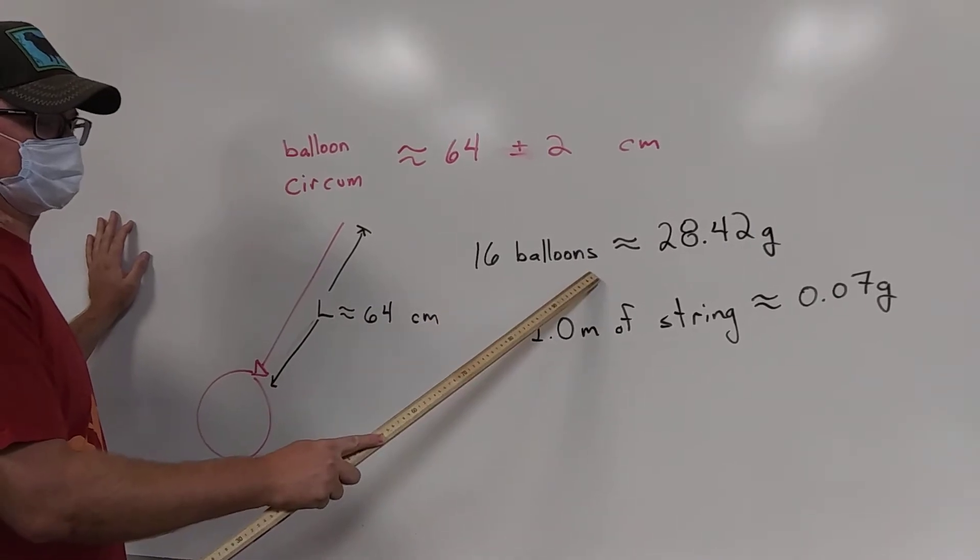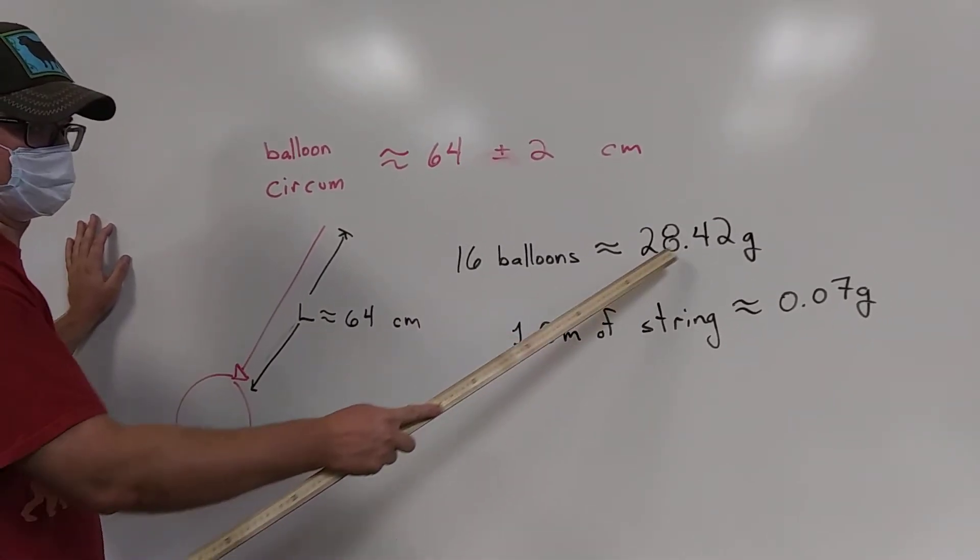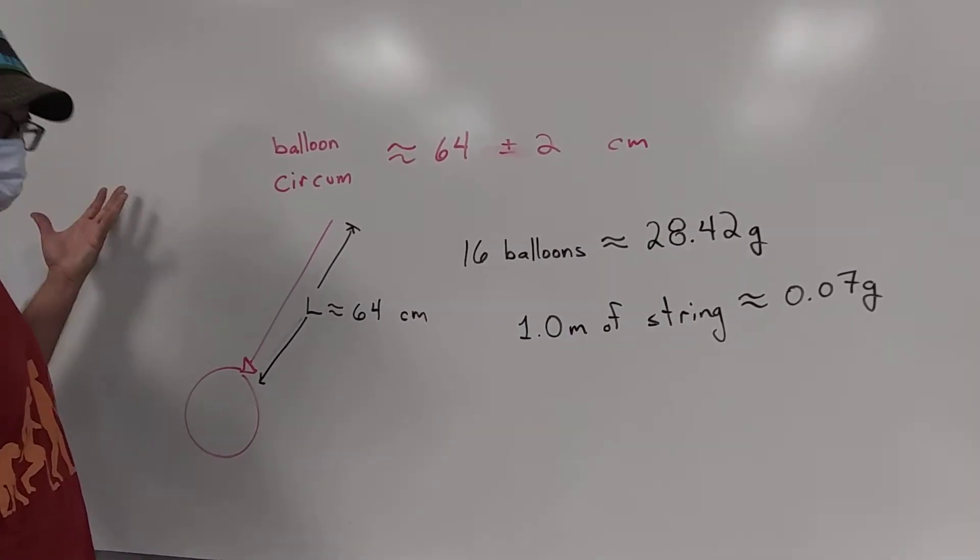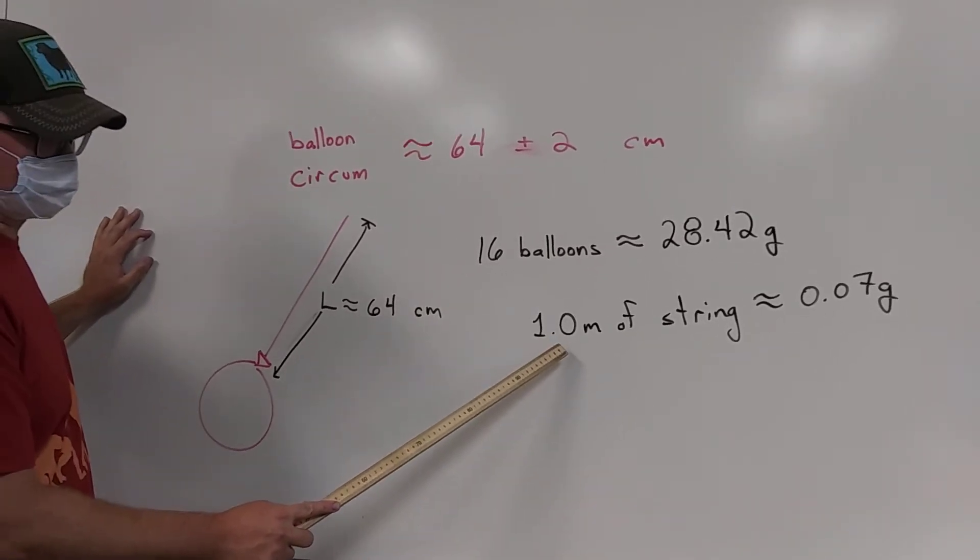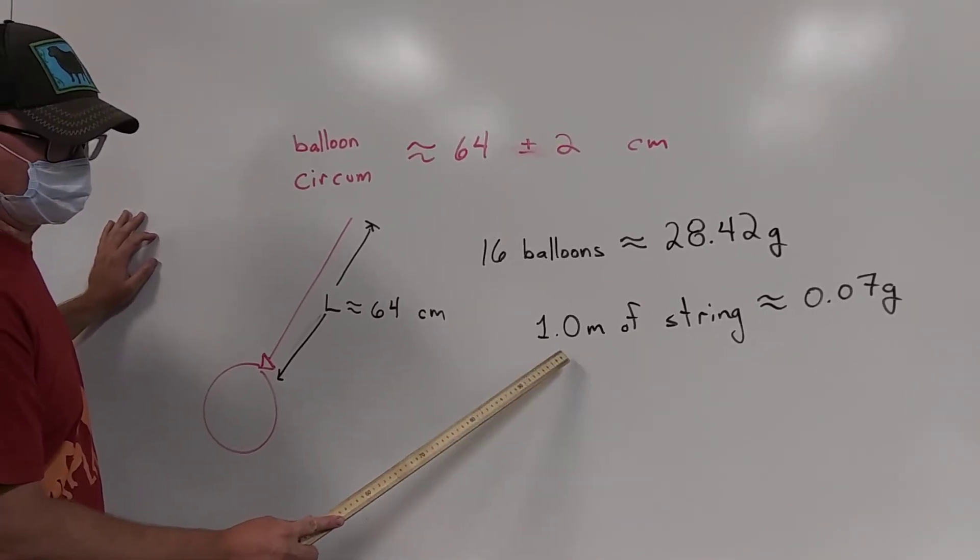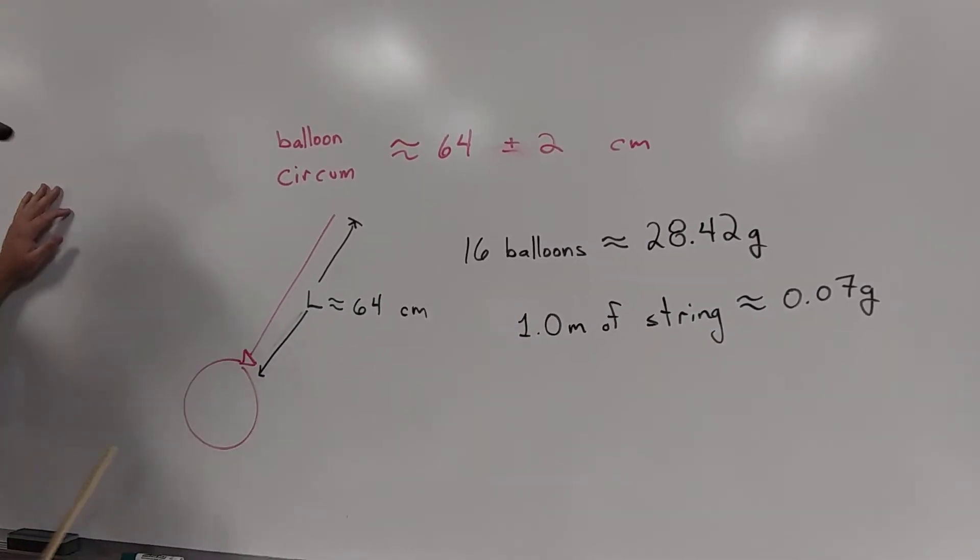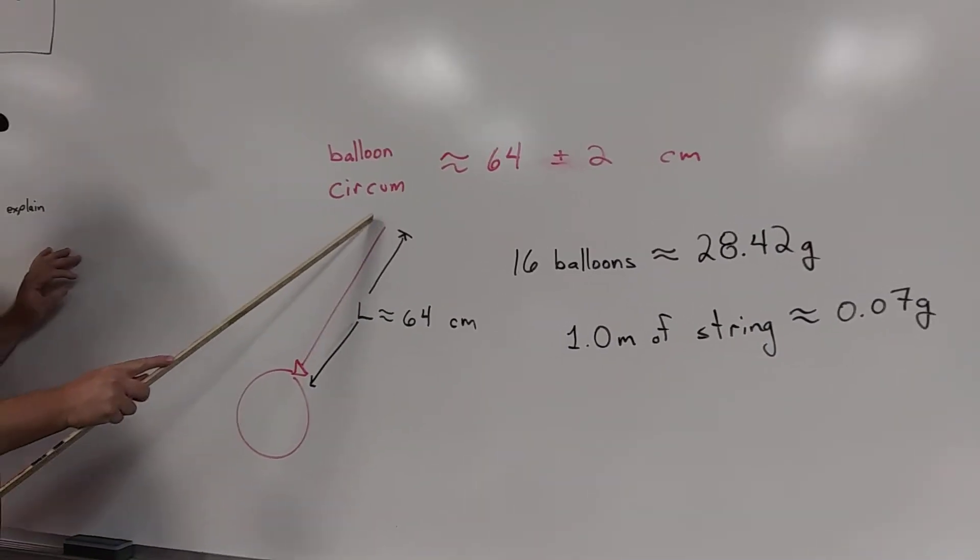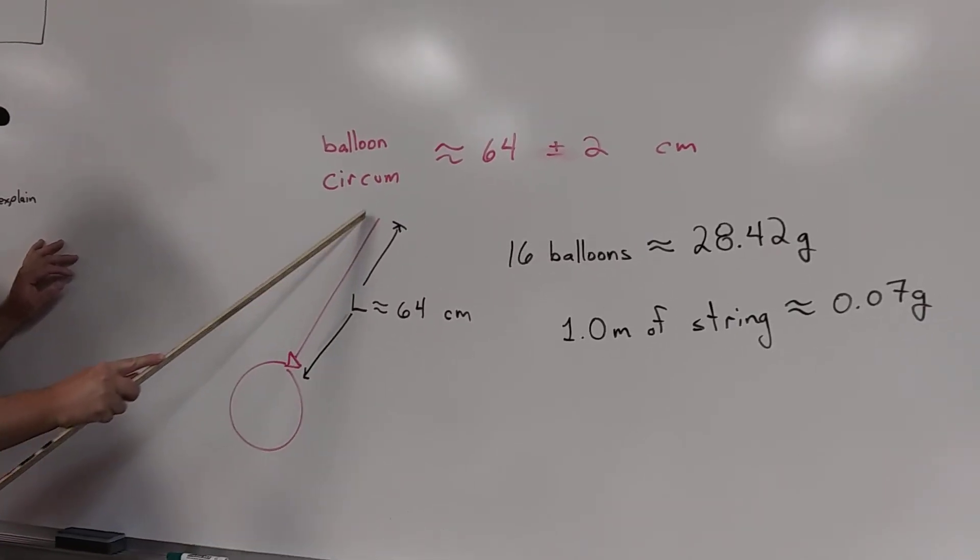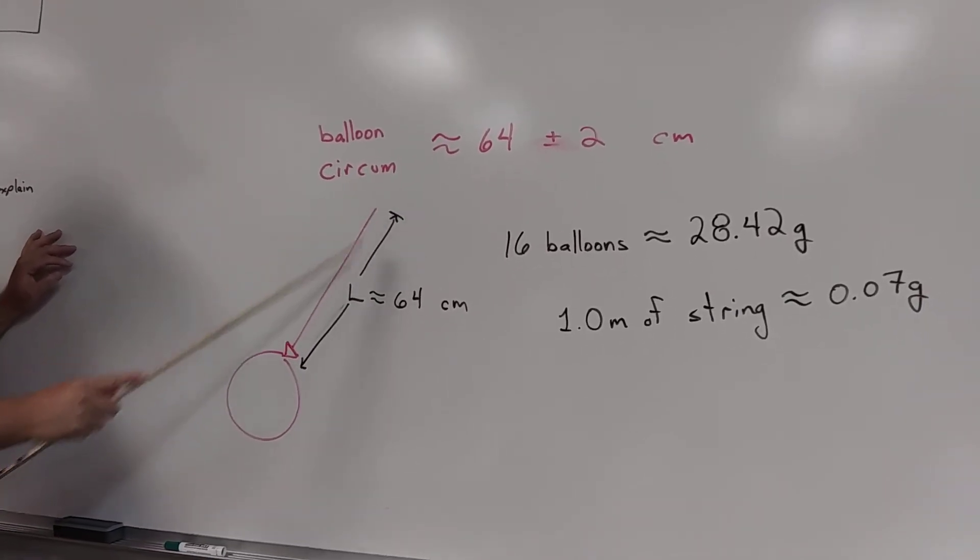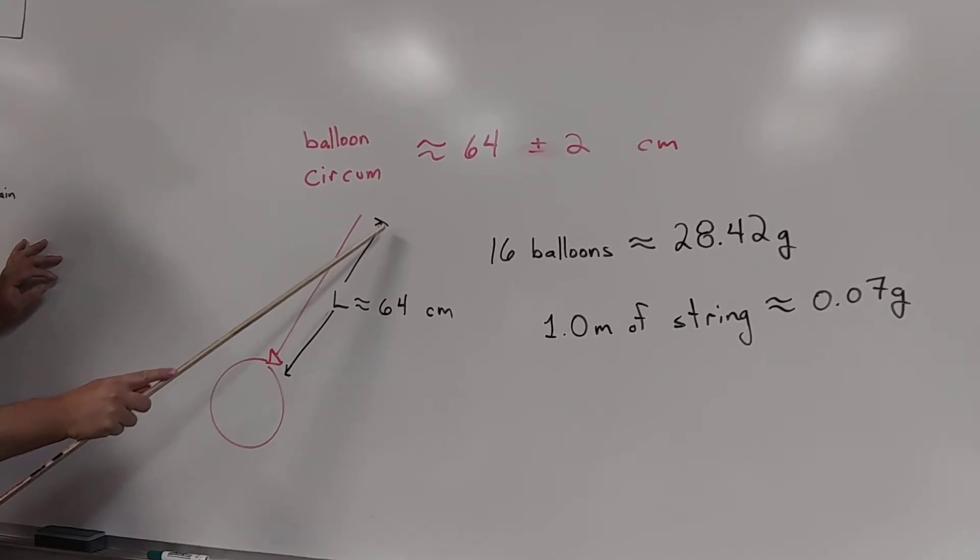I had 16 similar balloons that ended up with a mass of 28.42 grams. I found out that the string we used, I just did a measurement and found that one meter of the string had a mass of about 0.07 grams.